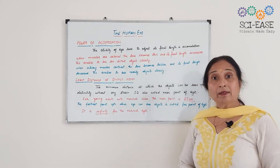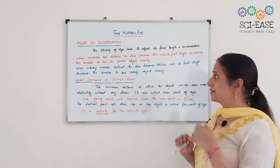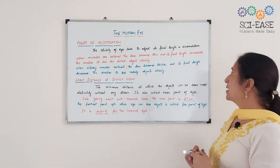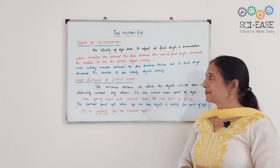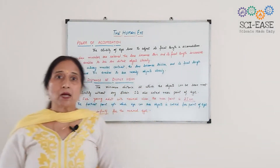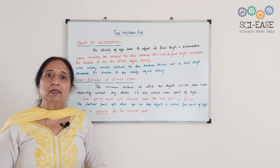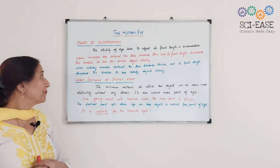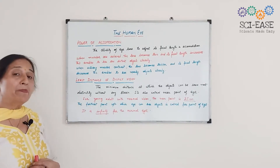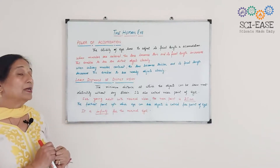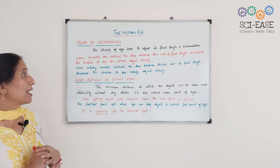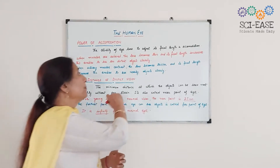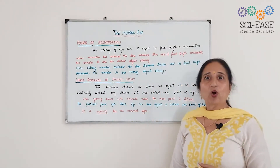When the muscles are relaxed, the lens becomes thinner and its focal length increases — this enables us to see distant objects. On the other hand, when the ciliary muscles contract, the lens becomes thicker and its focal length decreases, and this enables us to see nearby objects.